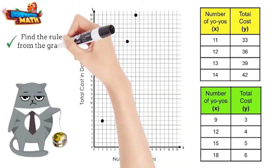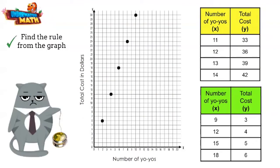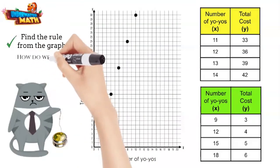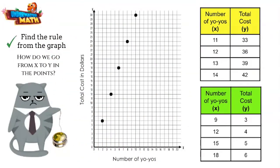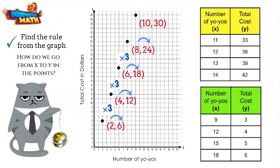First, we need to find the rule from the graph. That's right. Let's find out how we go from x to y by looking at the points on the graph. We can multiply by 3 each time. That must be our rule. Yes.